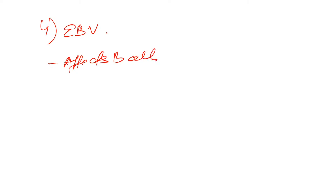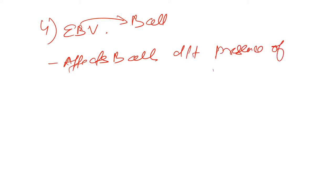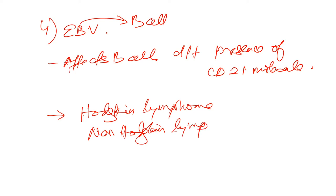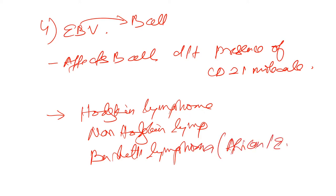The last DNA virus is Epstein-Barr Virus (EBV). It affects B cells due to the presence of the CD21 molecule. Cancers caused by EBV include Hodgkin's Lymphoma, Non-Hodgkin's Lymphoma, and Burkitt Lymphoma — which is African endemic. All of these are B cell cancers.